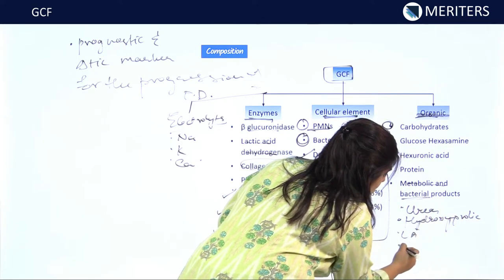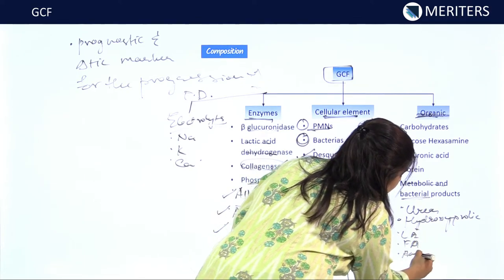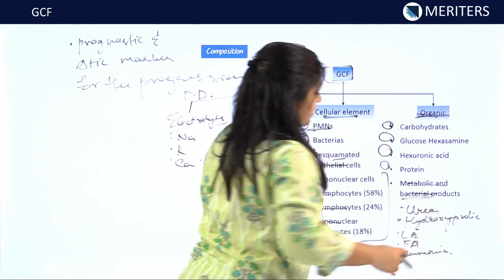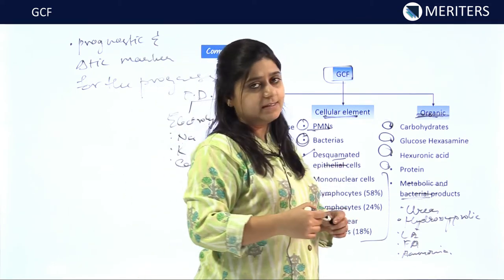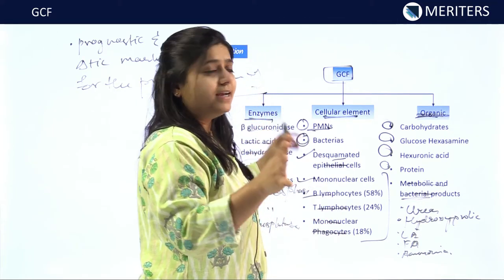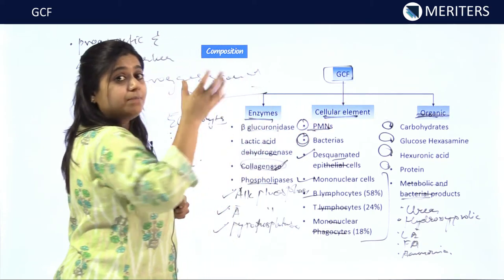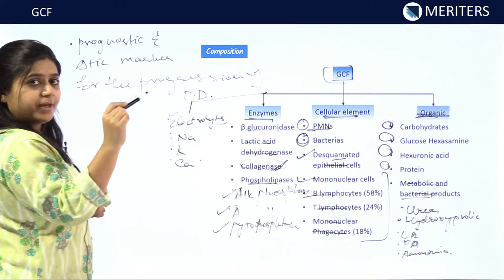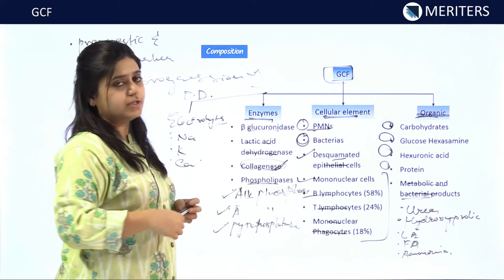These metabolic products — lactic acid, formic acid, and ammonia — are all released by bacterial metabolism. Thus we can say that active bacterial disease is ongoing in the gingival sulcus. The composition of GCF helps us in diagnosing periodontal disease, its progression, and prognosis.